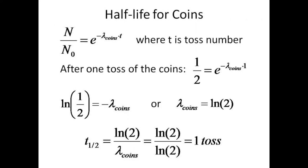For flipping coins, the probability of any single coin coming up heads is one-half. Thus, one-half equals e to the minus lambda times one single toss. Taking the log of both sides gives the decay constant for the coins equal to the log of 2. The half-life is thus log 2 over log 2, or one toss. One toss is enough to remove approximately one-half of the coins in the sample.